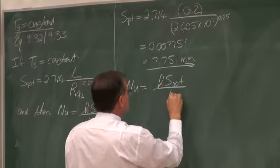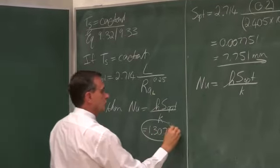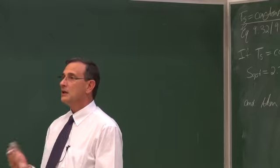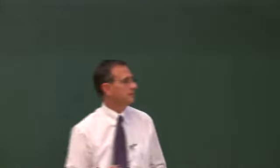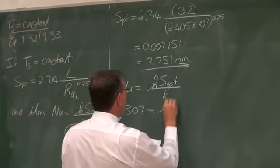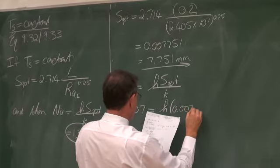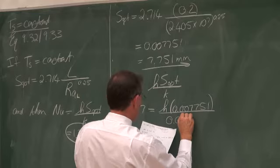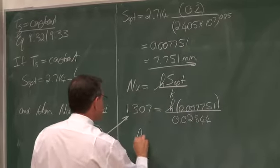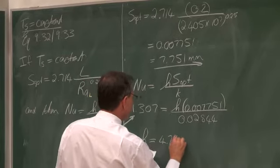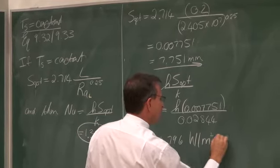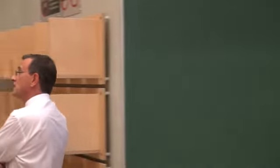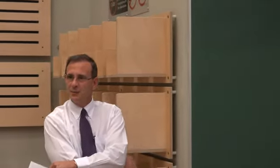The Nusselt number equals 1.307 at the optimum distance. Take note: it is not a high Nusselt number. Nu_s = h·S_opt / k, so 1.307 = h × 0.007751 / 0.02772, from which we can determine the heat transfer coefficient as h = 4.796 W/m²·°C. This is what we would expect, since the heat transfer coefficient is relatively low — typically smaller than 10 for natural convection.